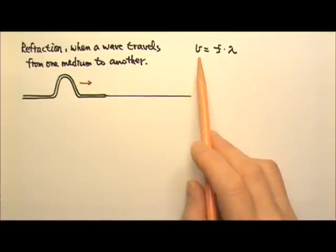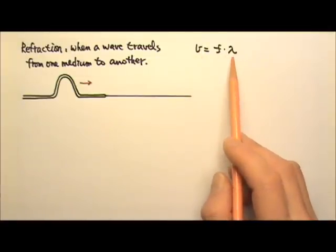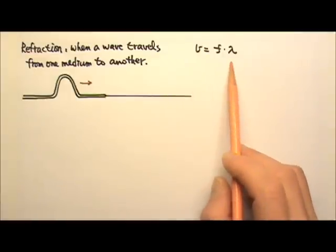Do you remember this equation? The speed of a wave equals the frequency times the wavelength. By the way, this is probably the most important equation in the waves and sound unit.